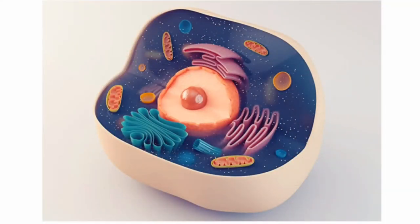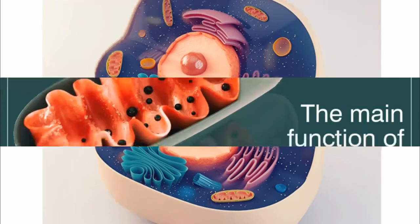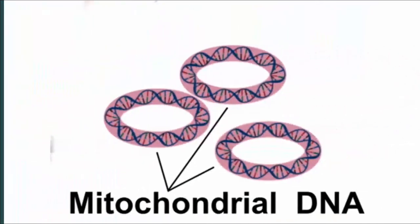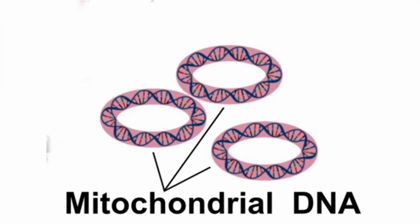The next organelle is one of the most well-known structures in the cell, commonly known as the powerhouse of the cell — the mitochondria. The mitochondria is mostly known for being the primary source of chemical energy generation, which is where it gets its nickname. However, one fascinating thing that a lot of people don't know about mitochondria is that they actually have their own DNA. And all of your mitochondrial DNA comes from your mother, which is particularly interesting for tracing maternal lineage.